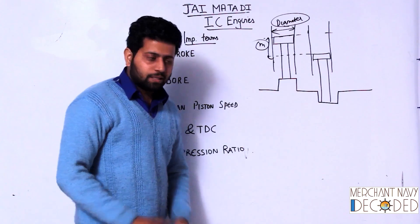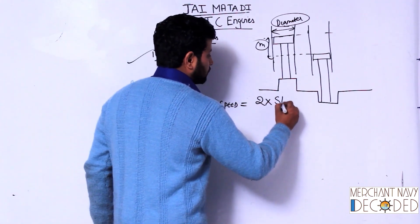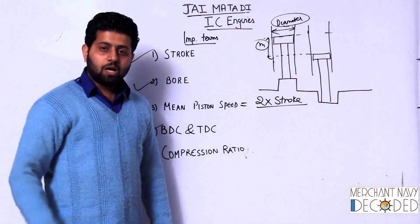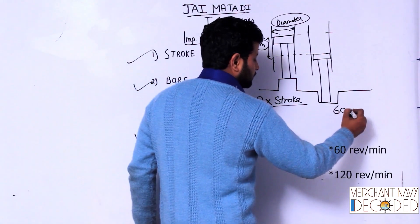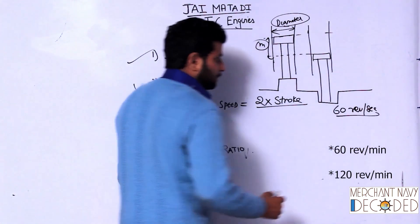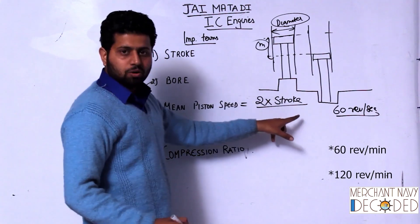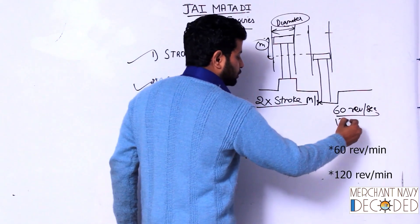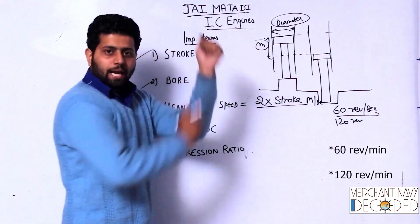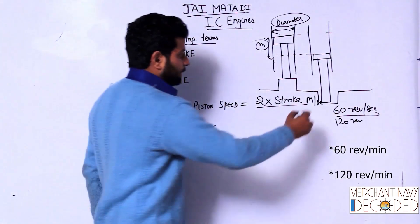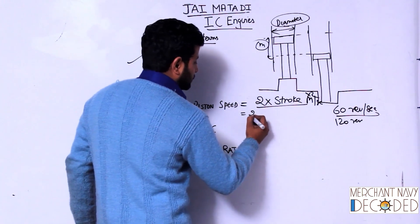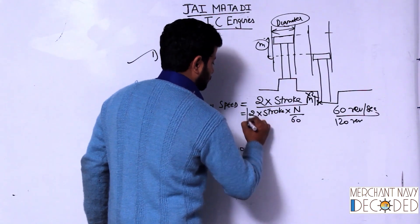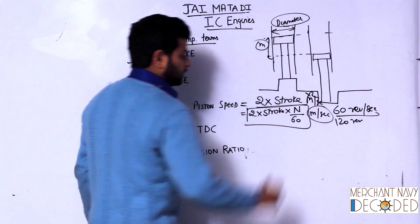How do we calculate the mean piston speed? We know the distance traveled is 2 times the stroke. If the number of revolutions is 60 per second, that means in 1 second it is traveling twice the stroke. If it is 120 revolutions per second, it is completing 2 full cycles per second. So the mean piston speed is: C = 2 × stroke × (N/60), where the result is in meters per second and stroke must be in meters.